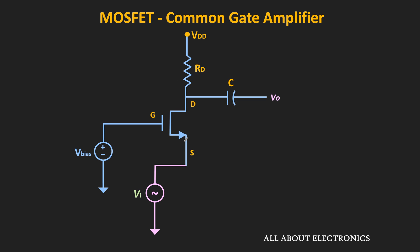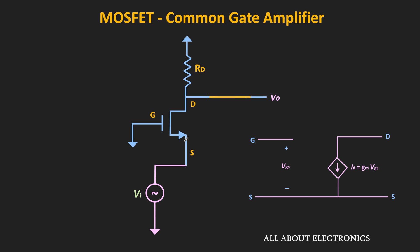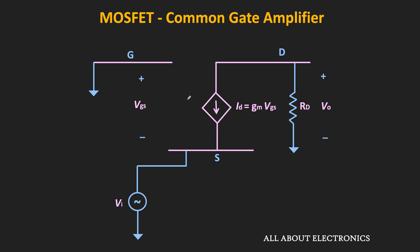For small signal AC analysis, the biasing voltage acts as zero, the capacitor acts as a short circuit, and the drain voltage VDD also acts as zero. We then replace the MOSFET with the small signal model. Throughout the video, for simplicity, we assume the MOSFET operates at relatively low frequencies where this small signal model is valid. In the equivalent circuit, the input appears between the source and ground terminal, the gate terminal is grounded, and the drain resistor RD appears between the drain and the ground terminal.